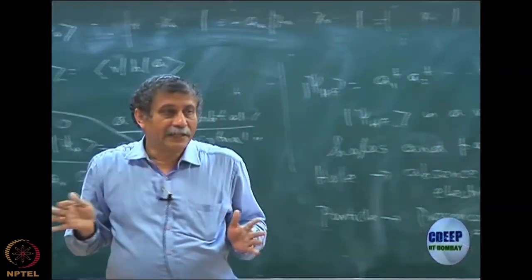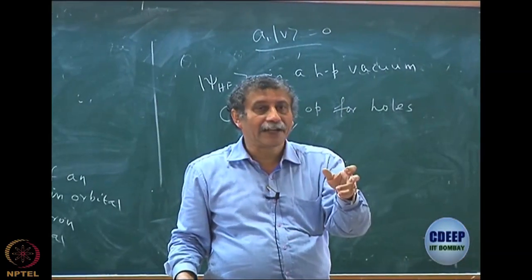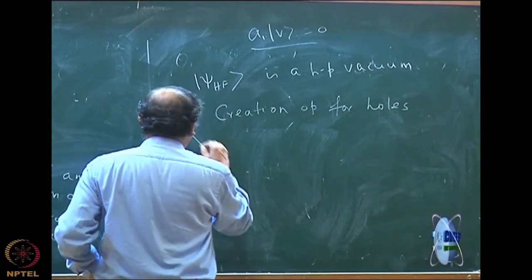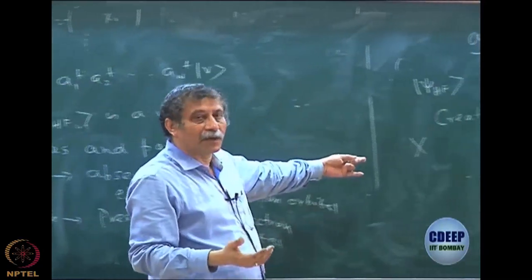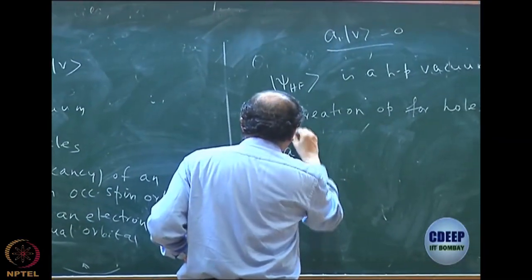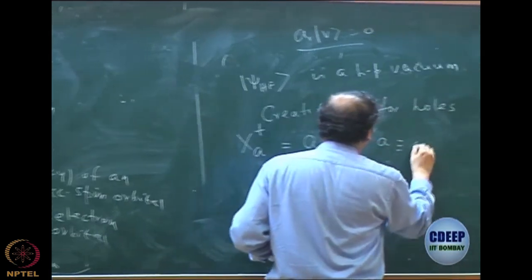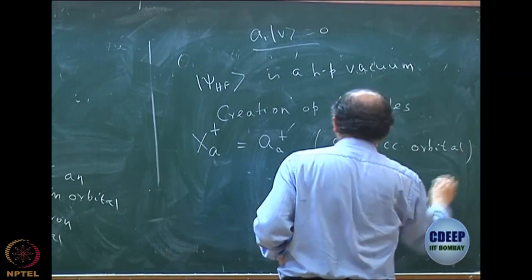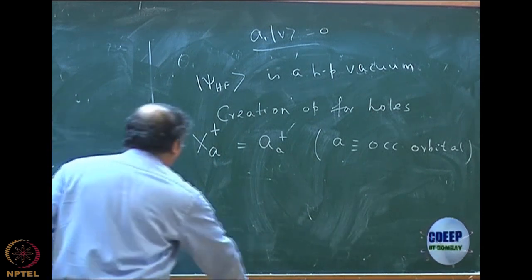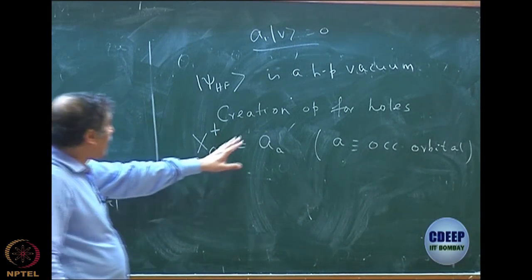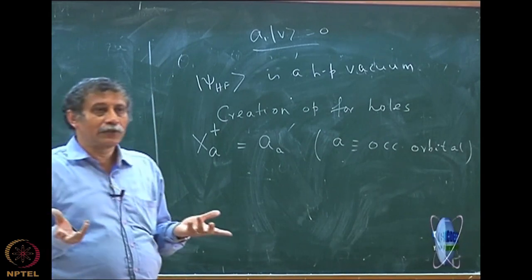This is not a physical vacuum, but it is a vacuum in the sense that it does not contain holes and it does not contain particles. So I should be able to define creation and annihilation operators not in terms of electrons, but in terms of holes and particles. I want a similar structure such that any annihilation operator acting on the Hartree-Fock should be 0. Since it has no holes and no particle, let me define creation operators for holes. How do I define a creation operator for holes? From Hartree-Fock, I have to annihilate an electron in the Hartree-Fock orbitals.